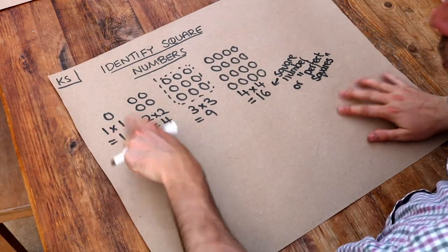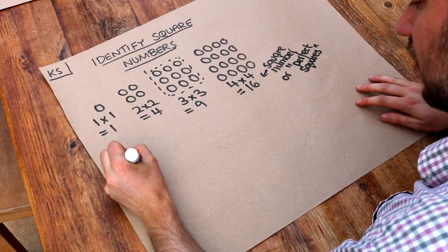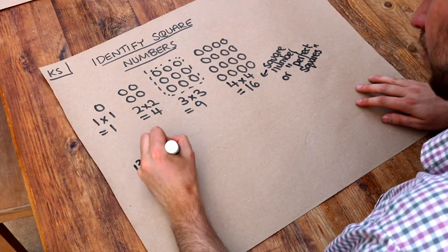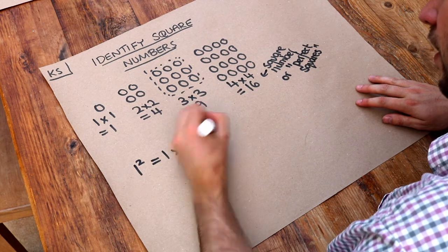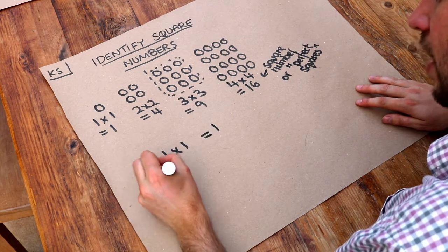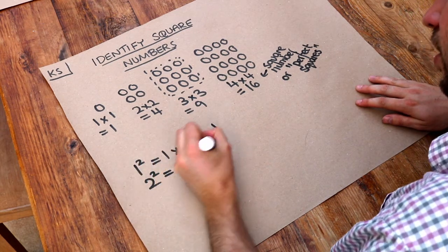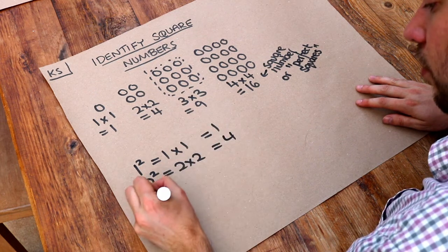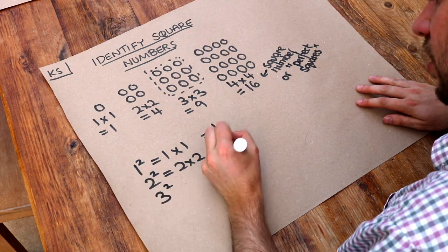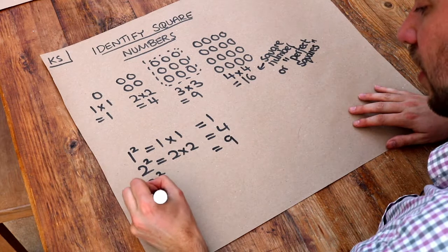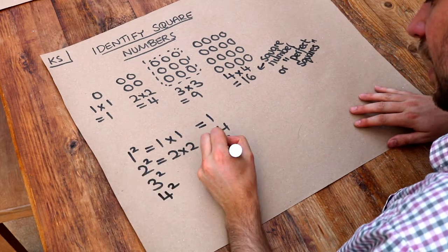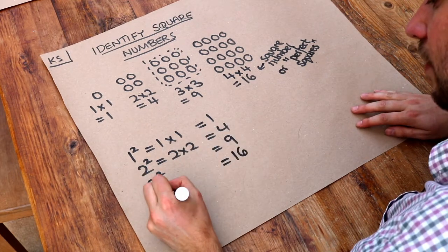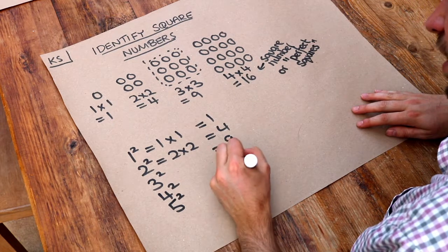Now another way of writing one times one is one squared. So one squared means one times one, which is equal to one. Two squared means two times two, which is equal to four. We've got three squared, which is equal to three times three, which is nine. Four squared is sixteen. Five squared is five times five, which is twenty-five.